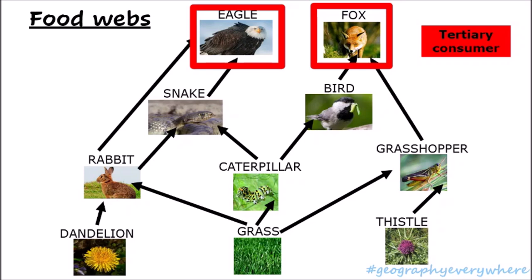We can also look at the fox. The fox's food chain starts with the grass, eaten by the caterpillar, then eaten by the bird, and then eaten by the fox, who is the tertiary consumer. As you notice, the eagle and fox are both secondary and tertiary consumers.